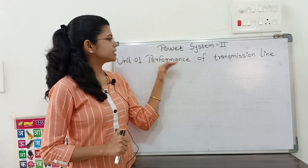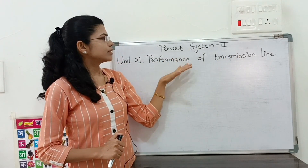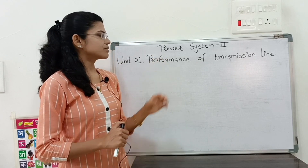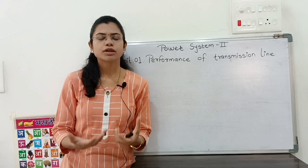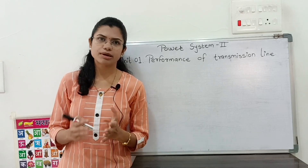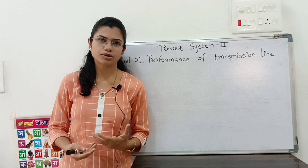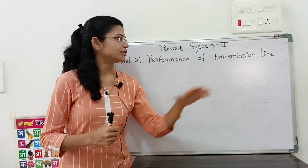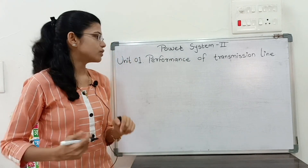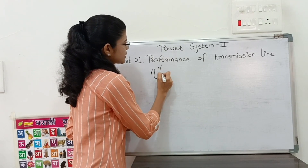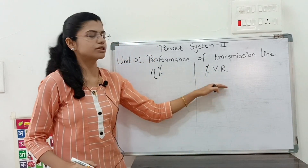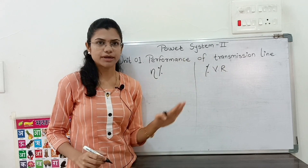The name of the unit is performance of transmission line. In this unit, we have to see how we can calculate the performance of a transmission line. Just like we analyze student performance based on exam marks, for a transmission line we need to check specific quantities. Basically, there are two quantities we check: percentage efficiency and percentage voltage regulation.